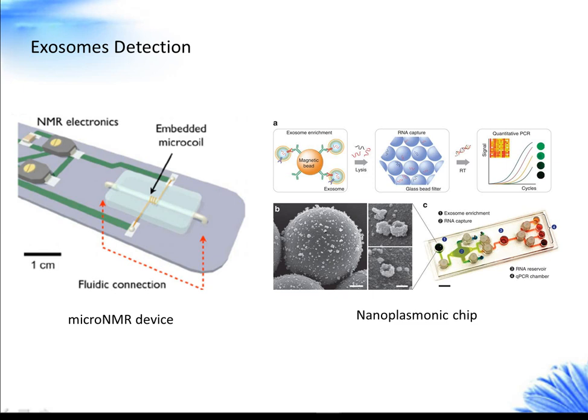These new systems include a micronemer device, a nanoplasmonic chip, a magneto-electrochemical sensor for protein profiling, and an integrated fluidic cartridge for RNA detection. Flow cytometry is an optical method to detect exosomes in suspension; nevertheless, the applicability of flow cytometry to detect single exosomes is still inadequate due to limited sensitivity and potential measurement artifacts such as swarm detection.